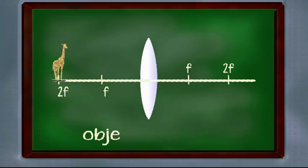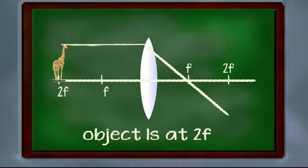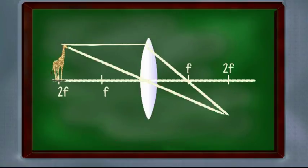Case 3, when object is at 2f, again repeating the same thing. One line parallel to principal axis which passes through the focus point and other line passing through the center of lens.